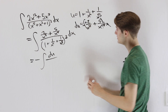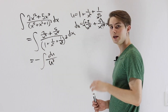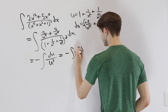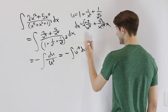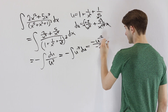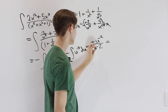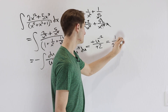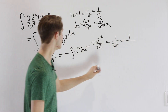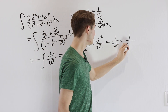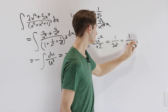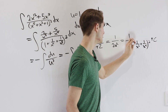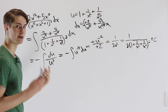Plugging everything in, we get the negative integral of u⁻³ du. By the power rule, this gives −(u⁻²)/(−2), and the two negatives cancel, leaving 1/(2u²). Substituting back u = 1 + 1/x² + 1/x⁵, our final answer is 1 / [2(1 + 1/x² + 1/x⁵)²] + C.